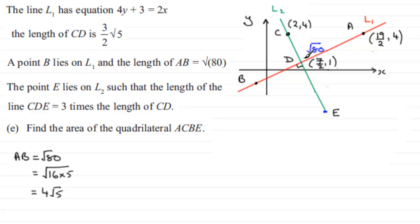So we know that this length here CD was 3 over 2 root 5. So we've got one there, two, three—so this must be twice that. DE must be twice this length. So if I multiply this by two, I know that the distance DE must be equal to just twice this, which would be 3 root 5.